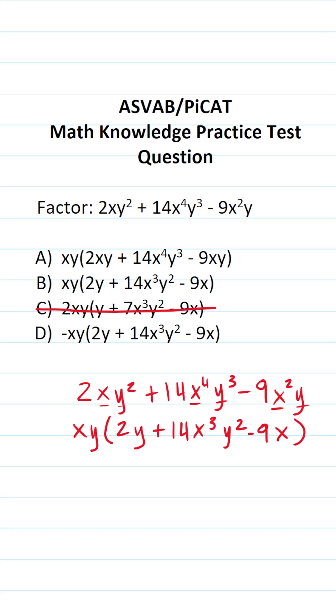And just like that, we factored this one. You can see our result is xy times 2y plus 14x to the third y squared minus 9x, which is answer choice B.